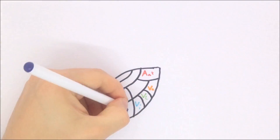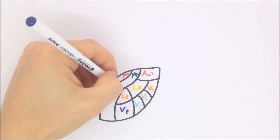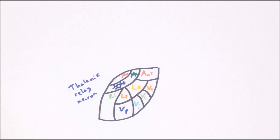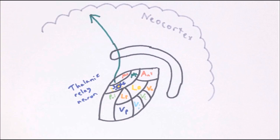The thalamus is composed of many different nuclei, and each consists of thalamic relay neurons. These are excitatory neurons which receive information from a variety of different brain areas and relay this information to areas of the neocortex.